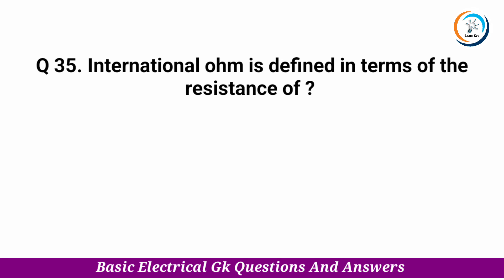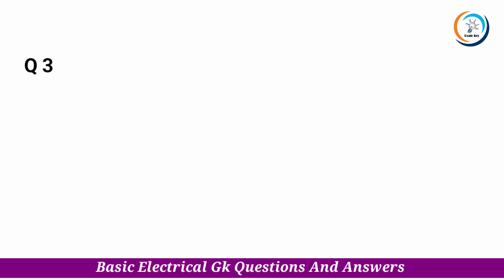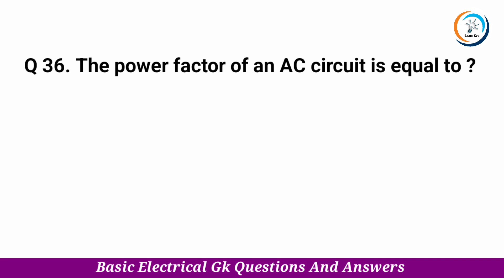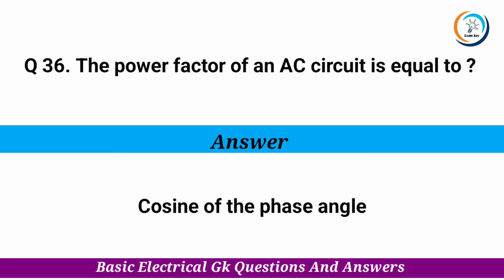International Ohm is defined in terms of the resistance of — Answer: a column of mercury. The power factor of an AC circuit is equal to — Answer: cosine of the phase angle.